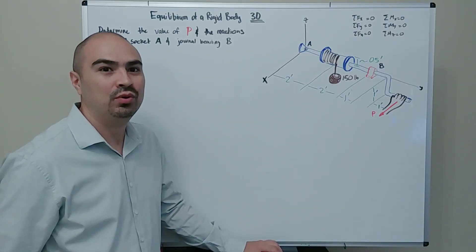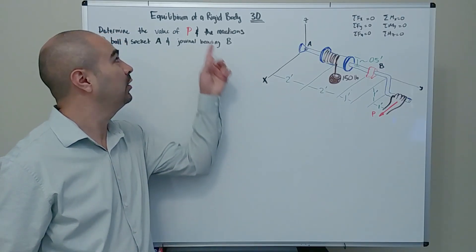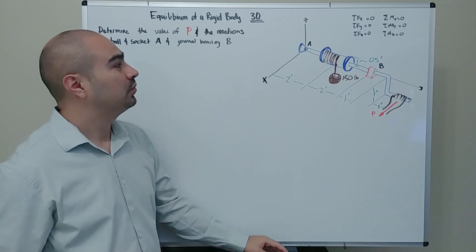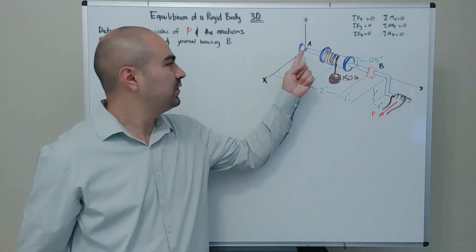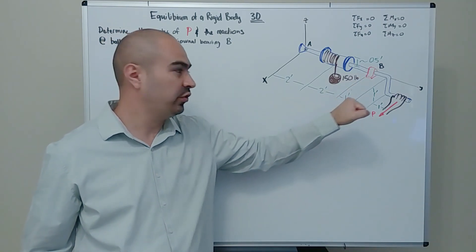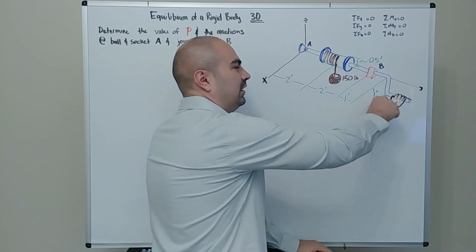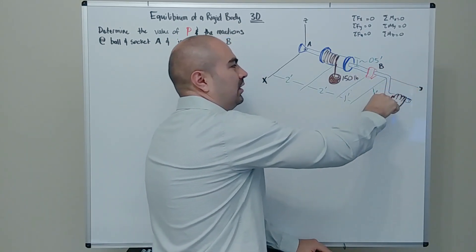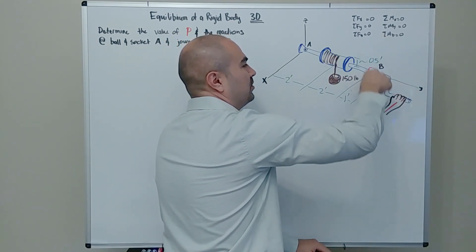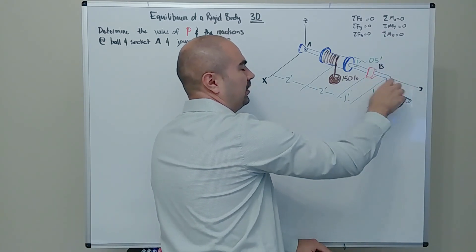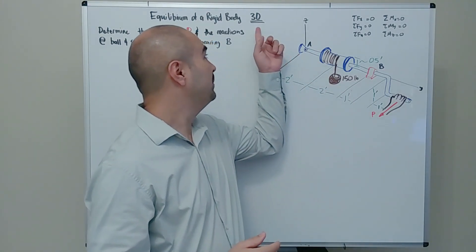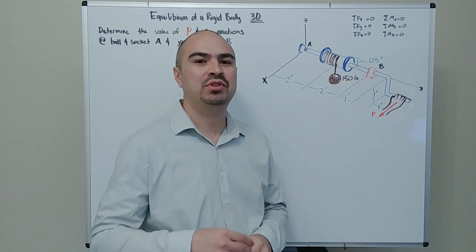In this video, let's go over an example dealing with the equilibrium of a rigid body in three dimensions. Our job is to figure out what's going on at the ball-and-socket support A, at the journal bearing B, as well as the force P being applied on this windlass so that this body is in equilibrium — meaning it's not rotating, just enough force to keep it there without rotating.